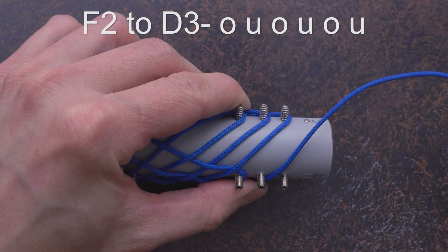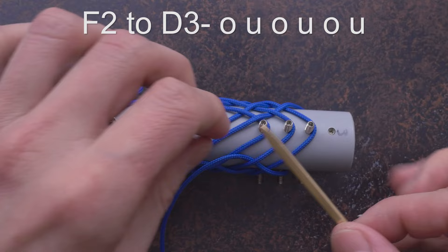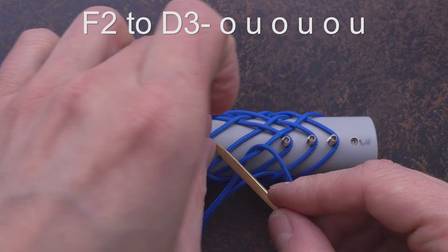From F2, we move to D3, starting over, then under, over, under, over, under.